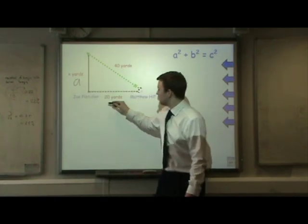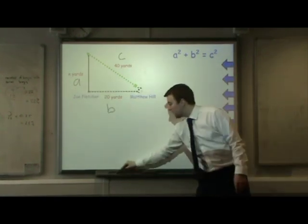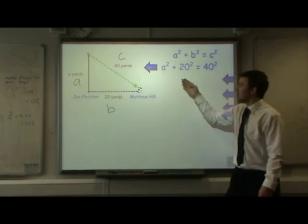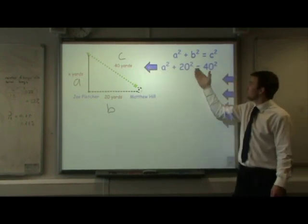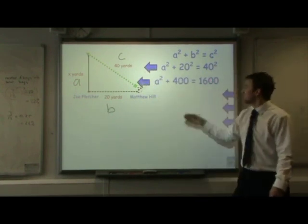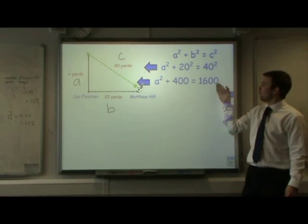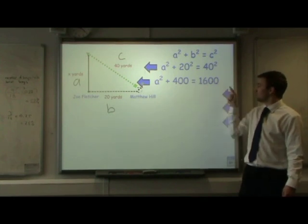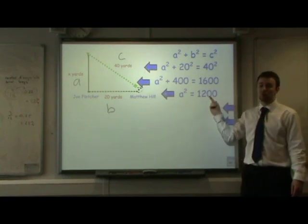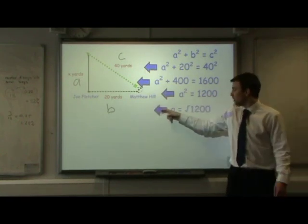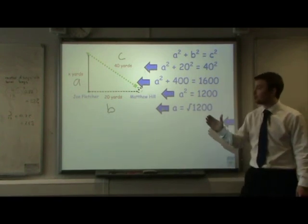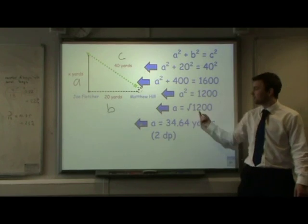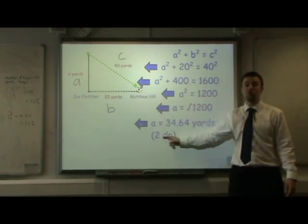First of all we label the sides A, B and C as we did last time. Then we substitute those values into our formula: A squared plus B squared equals C squared. This time we don't know what A is, but we know that A squared plus 20 squared equals 40 squared. If I evaluate those numbers, 20 squared is 400 and 40 squared is 1600. So I know that A squared plus 400 equals 1600. If I take 400 away from both sides, I find that A squared is equal to 1200. If I take the square root of 1200, I'll find the value for A — it's 34.64 yards, rounded to two decimal places — and that's how far Joe needs to run forward to intercept that pass.